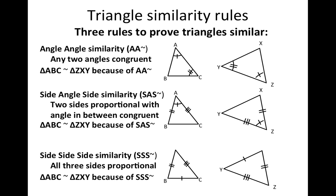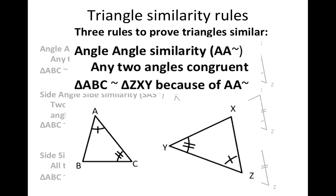In this example, triangle ABC is similar to triangle ZXY because of side-side-side similarity. For this lesson, we're going to be talking exclusively about the first of those, which is angle-angle similarity — two triangles that have two angles that are the same must be similar.